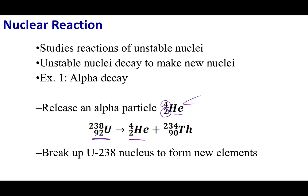Let's balance the alpha decay reaction for uranium-238. When we balance nuclear reactions, we balance the mass number and the atomic number — not elemental symbols — because the nucleus itself is changing. On the left-hand side, the atomic number is 92. So on the right, 2 plus 90 gives 92, meaning we decay into a thorium nucleus. For the mass number, 238 on the left: the alpha particle contributes 4, so the thorium isotope produced is thorium-234.